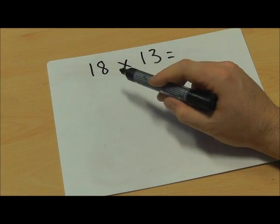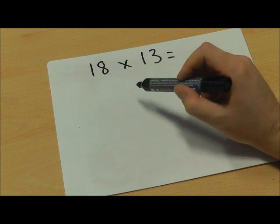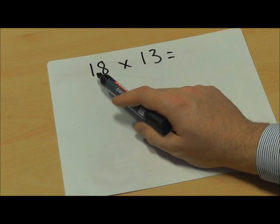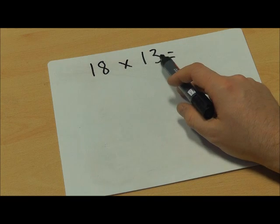Now we're going to look at using long multiplication for multiplying two digit numbers. So in this example we are going to do 18 multiplied by 13.